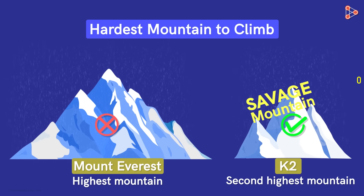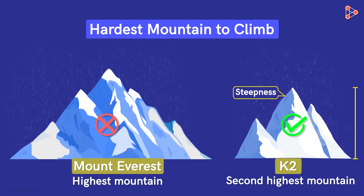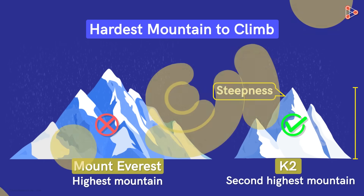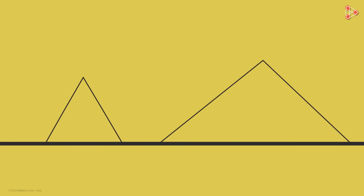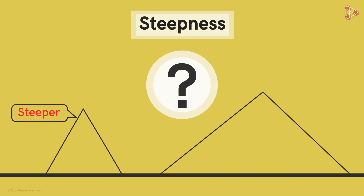It is harder to climb K2 because, along with height, there are many other factors to consider. Steepness is one of them. For example, consider these two mountains. The right one clearly has more altitude, but the left one will be harder to climb as it is steeper. Now, what do we mean by steepness?